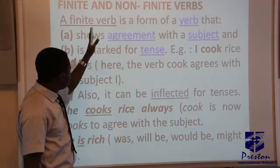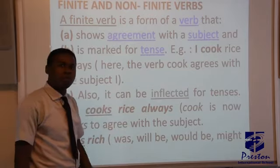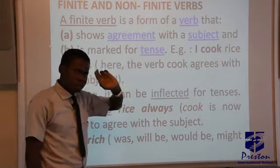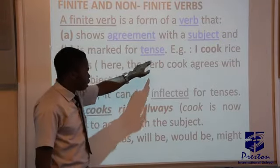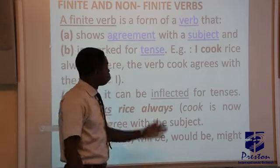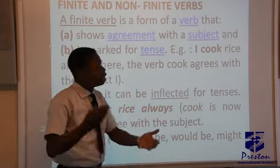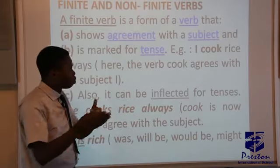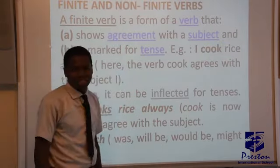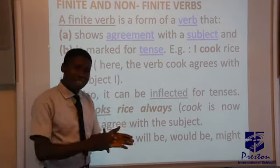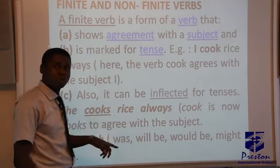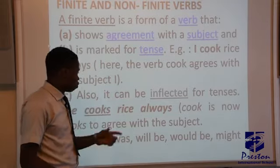Finite and non-finite verbs — finite verbs are verbs that show agreement with a subject. They are also marked for tense and can be inflected for tenses. The major thing about finite verbs is that they are always in singular or plural form — past or present — and they show tense. For example, 'she cooks,' where 'cooks' is the singular form of the verb 'cook.'